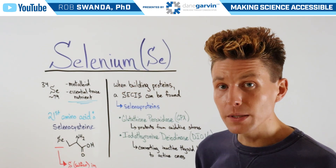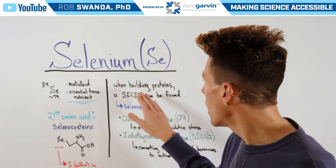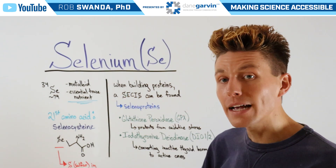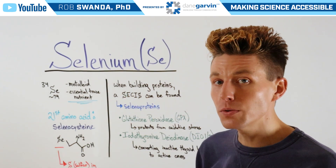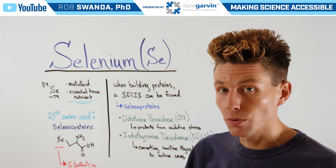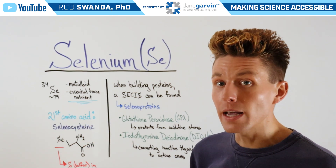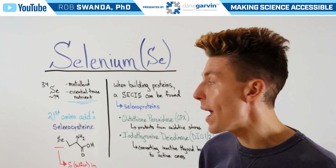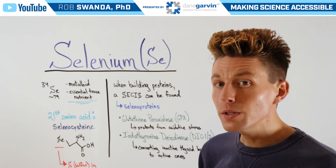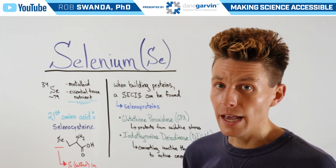When ribosomes are reading our mRNA and they come in contact with a selenocysteine incorporation sequence as they're building a protein, they will incorporate selenocysteine into that growing polypeptide chain. That will create a certain type of protein known as a selenoprotein, and there are only a few in our bodies.